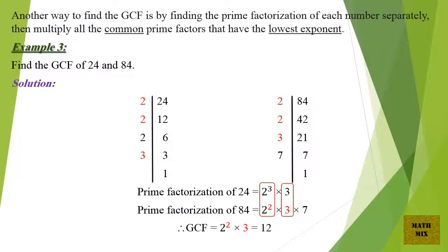Another way to find the GCF is by finding the prime factorization of each number separately, then multiply all the common prime factors that have the lowest exponent.